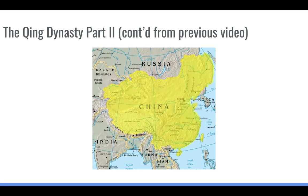Only Manchu could serve in high positions, and they kept Manchu from marrying ethnic Han Chinese. However, they do keep certain things that worked in China: the bureaucracy, civil service exams, etc. There is continued interaction with European presence, but that changes slightly as we get into time period five.